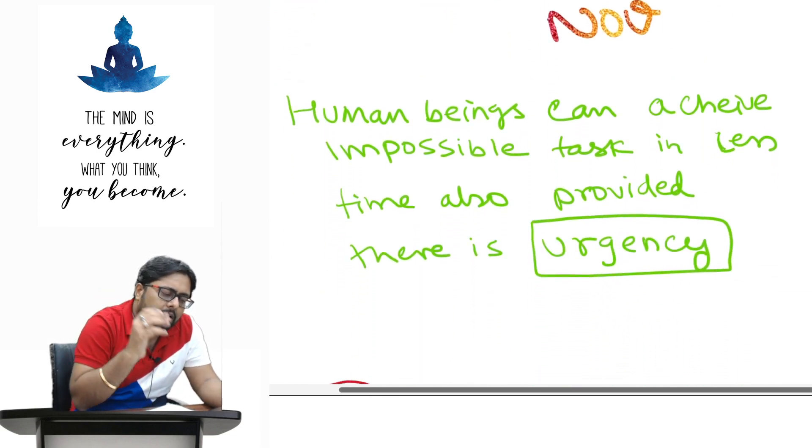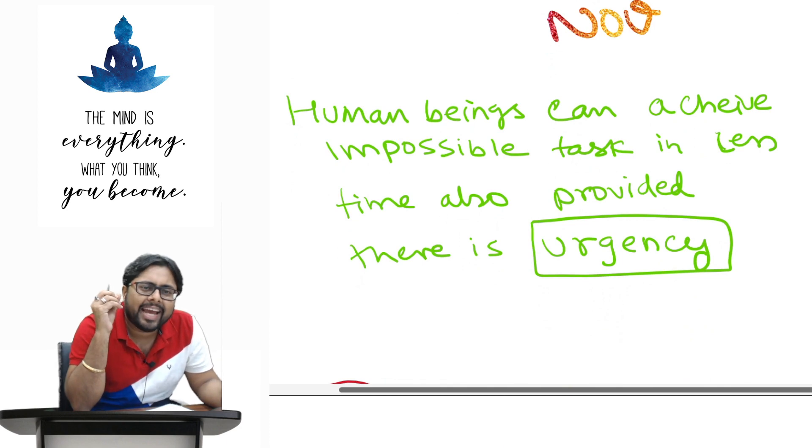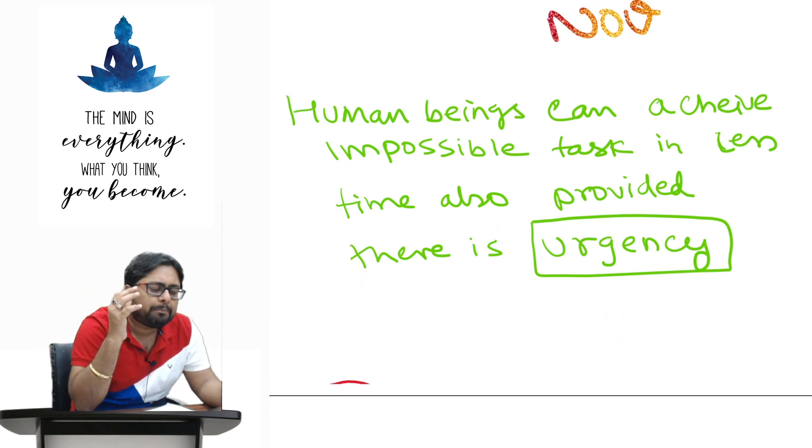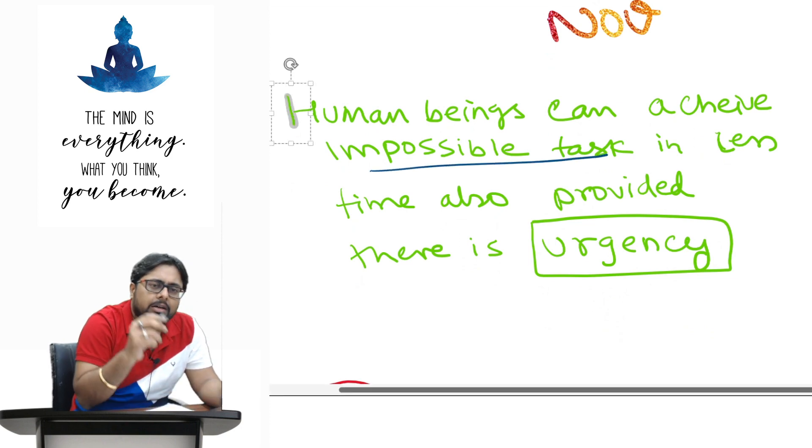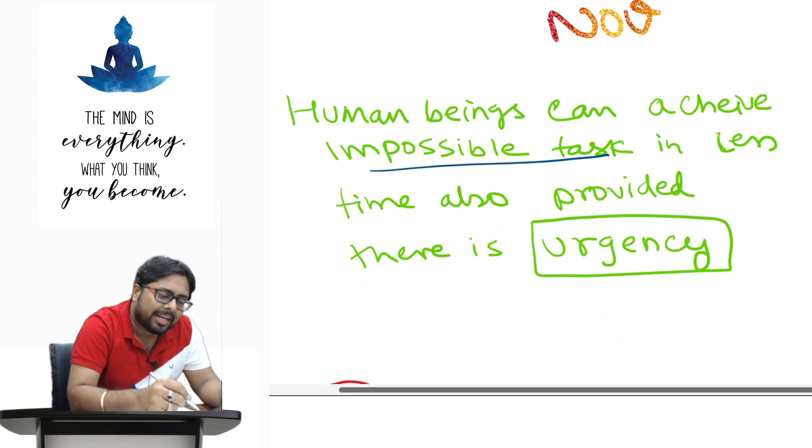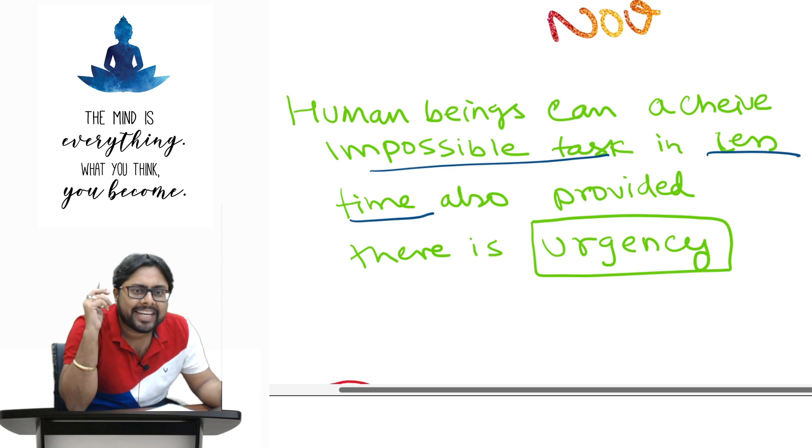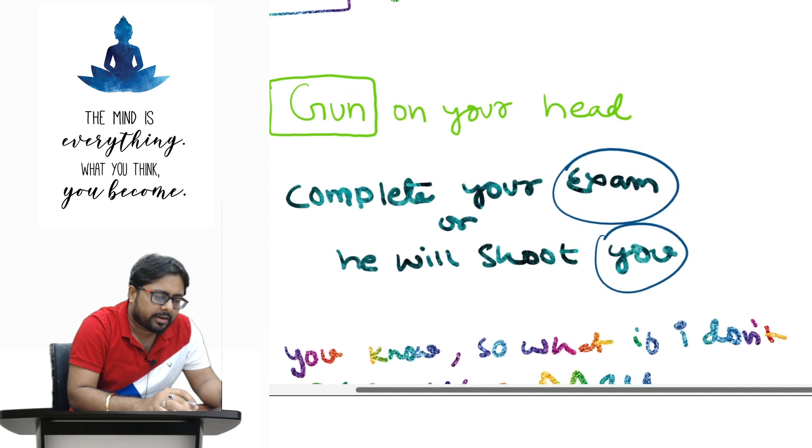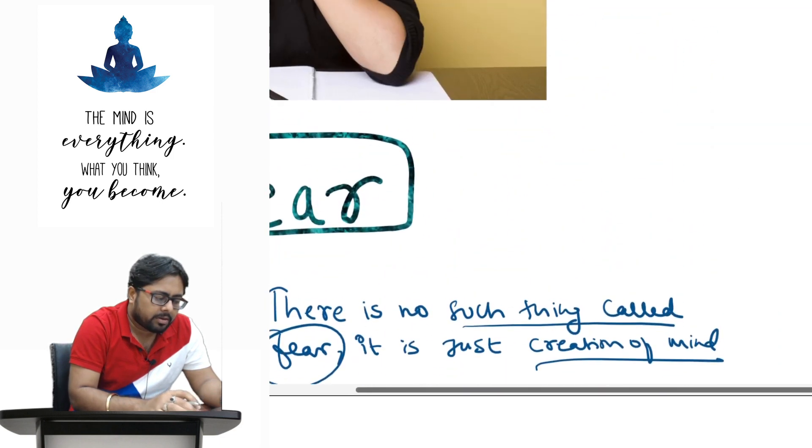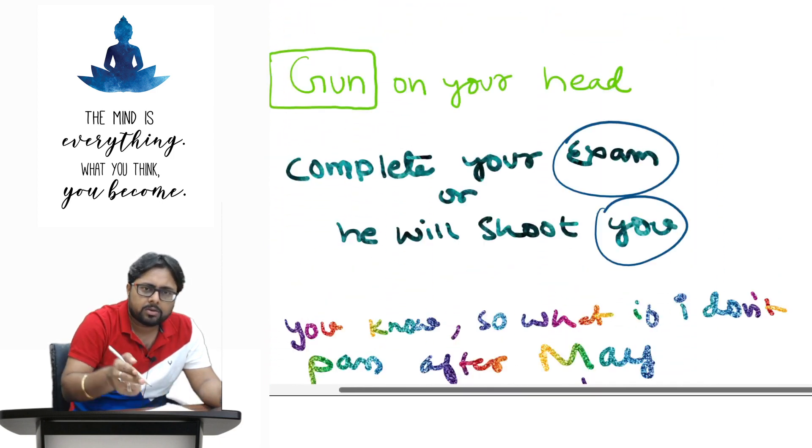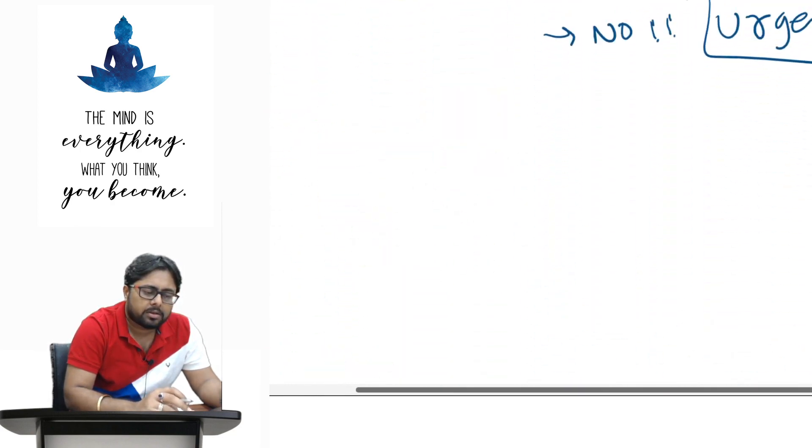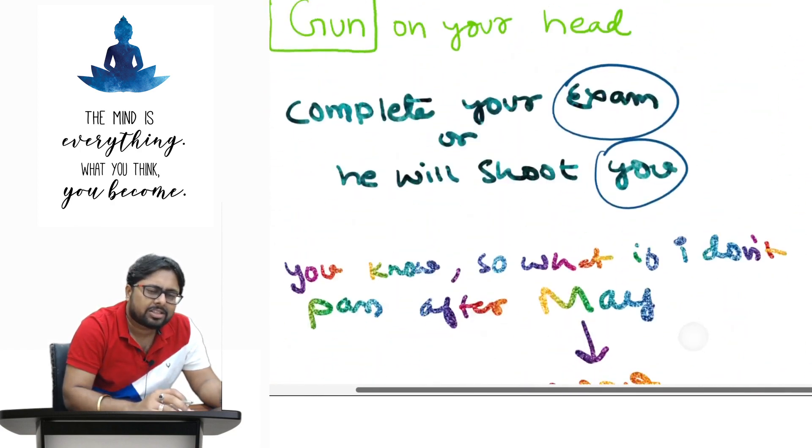So, the message is, human being can achieve any damn thing, whether, even if it seems it is impossible task, the human being can achieve it, even in less time also provided, there is urgency. See, in this case where the person was shooting him with the gun. In both cases, it is extremely urgent.